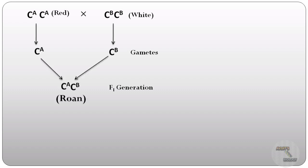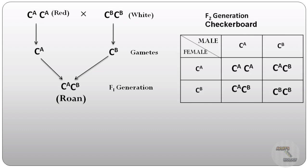Then in the F1 generation we will get the heterozygote C^A C^B which is showing the phenotype of roan coat color.